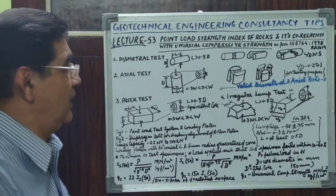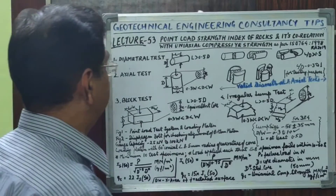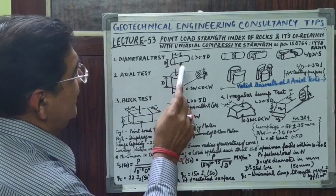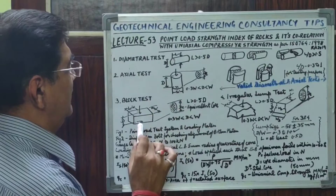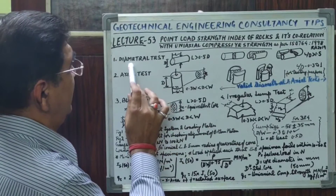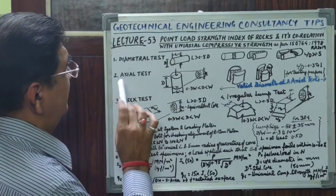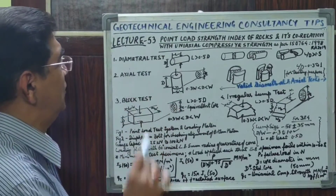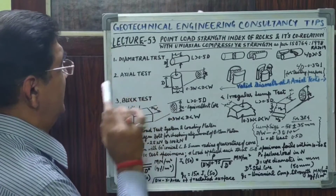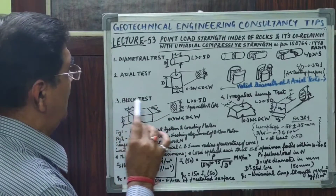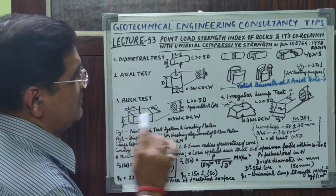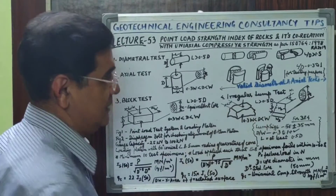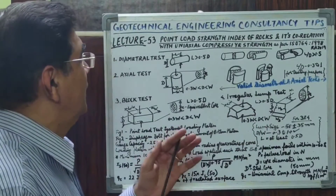What does this code say? This test is done in four ways: either the diametral test, or the axial test, or the block test, or the irregular lump test.